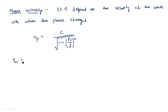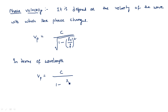In terms of wavelength, the phase velocity Vp is equal to c divided by square root of (1 minus (λ₀/λc) squared), where λ₀ is the free space wavelength and λc is the cutoff wavelength.